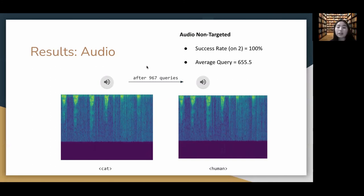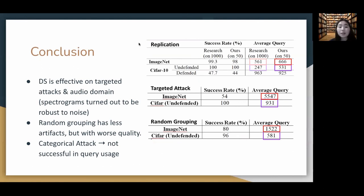These are the results we got when testing DeepSearch on Audios. So we had collected datasets for five class classification and here you can hear the actual results. So this is the original and this is the adversarial example. It still sounds like a cat for us, but gets classified as a human.